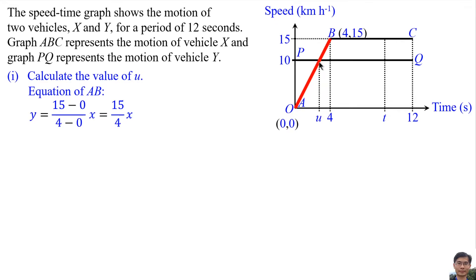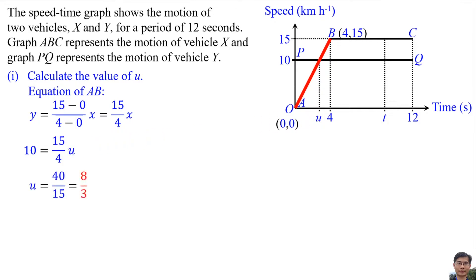To find the intersection point, we substitute N into Y and U into X. Solving the equation, U equals 8/3.